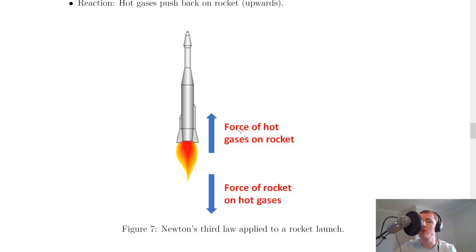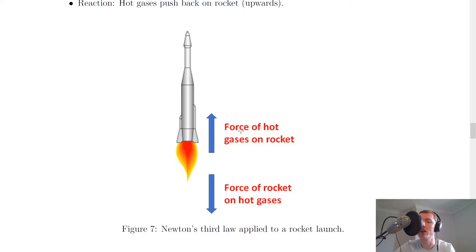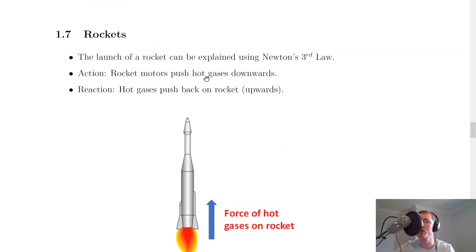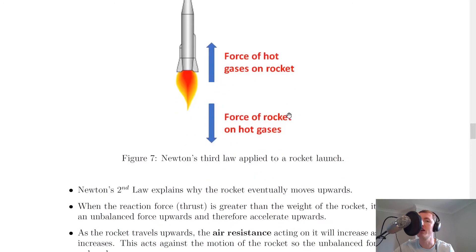A common misconception that pupils often have is to think that the hot gases are pushing off the ground. But if you think about it, once the rocket has left the ground, it's still going to have some force acting back on the rocket causing it to move upward. So when it's nowhere near the ground, it can't be the ground that is playing a role here. So it's got to be the rocket motors pushing hot gases downwards and the hot gases pushing back on the rocket itself.